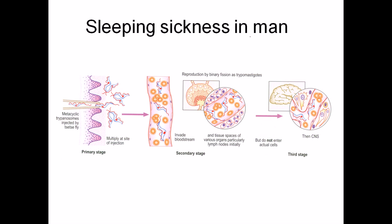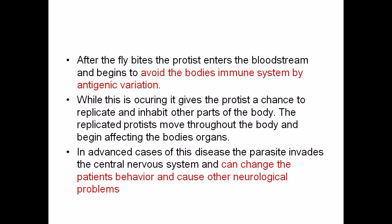Looking at the stages inside the human body: after injection by the tsetse fly, trypanosomes first enter the blood vessel and move through blood or lymphatic vessels in the secondary stage. They can also migrate to other tissues using their flagella. In the third and most dangerous stage — which sometimes occurs and sometimes does not — they can cross the blood-brain barrier, move to the brain region, and start damaging the central nervous system.